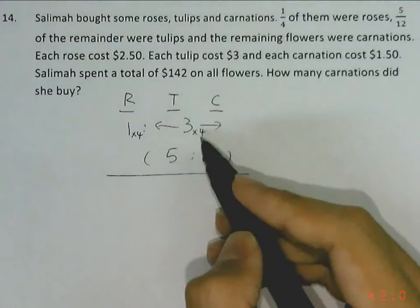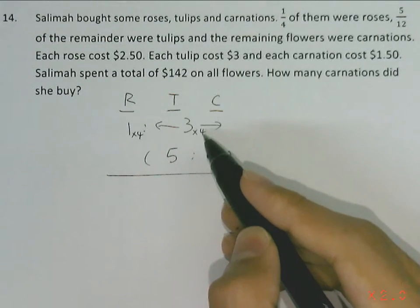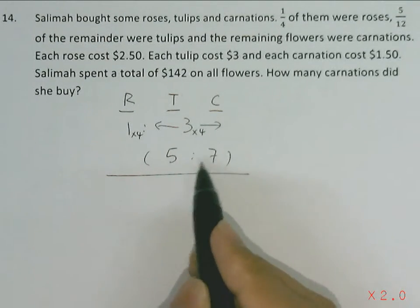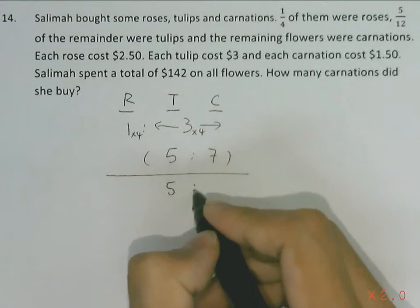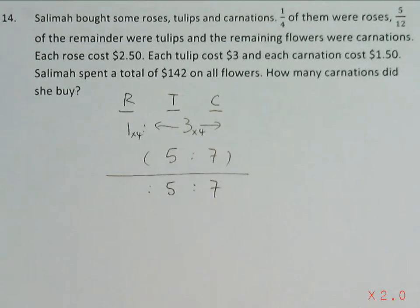And we can combine the ratio now. 3 multiplying by 4 will give us 12 units, which is the same as 5 units plus 7 units. So now we know that tulips to carnations will be 5 to 7.